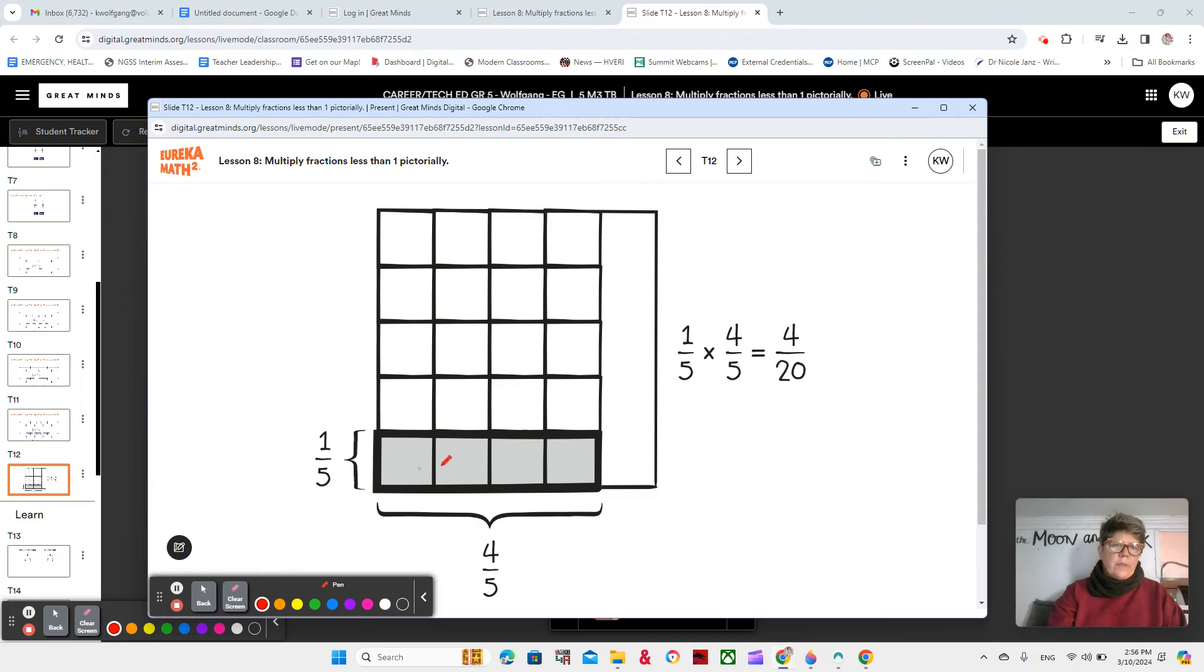So when they made their 5ths and 4/5ths, they have the 4 out of 5. But when they make the 1/5th, they didn't make it come all the way across. So when they counted their pieces, they only counted 20.